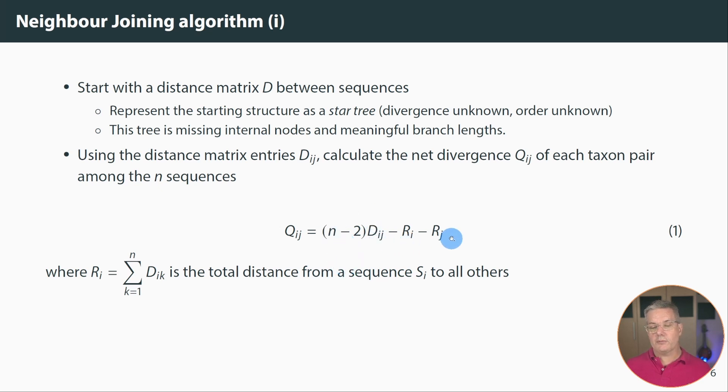And then we subtract these values r sub i and r sub j. And those are calculated by this little sum which is effectively if you just take one glance at this it's quite clear this is all the distances to i. R sub j would be all the distances to j. So what we have here is the distance we're interested in and we're subtracting all of the distances for both i and j. And so that is the net divergence of this pair of sequences.